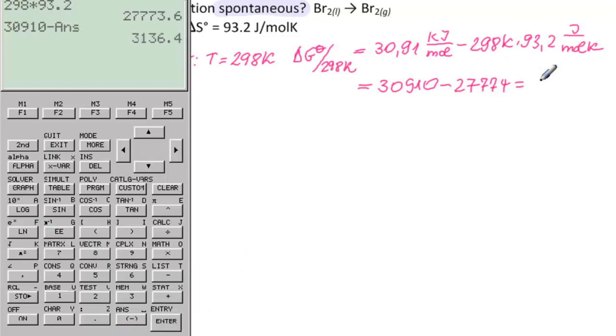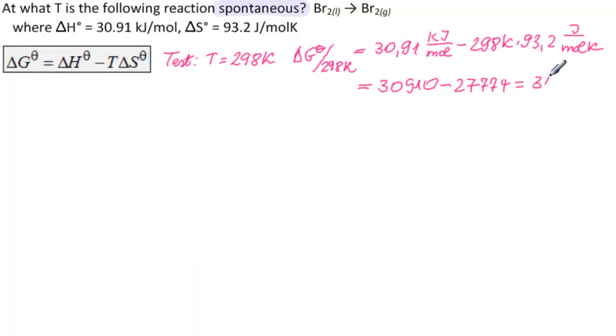And that is 3,136 joules per mole, and that is greater than zero, so not spontaneous. Remember, spontaneous is anything that's under zero. So how are we going to solve this? We're going to set ΔG° equal to zero and see what T we get.